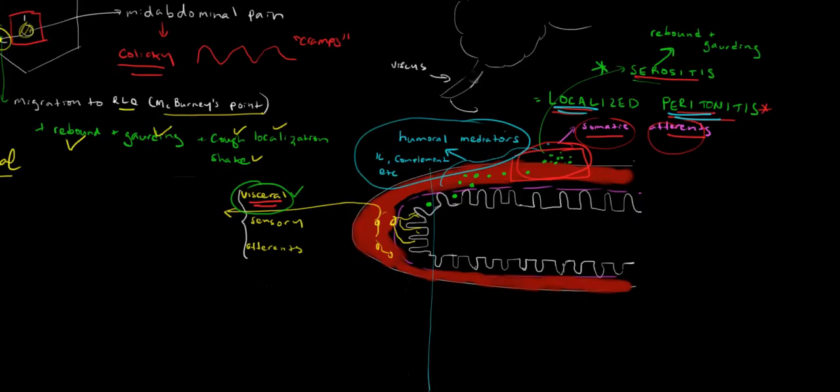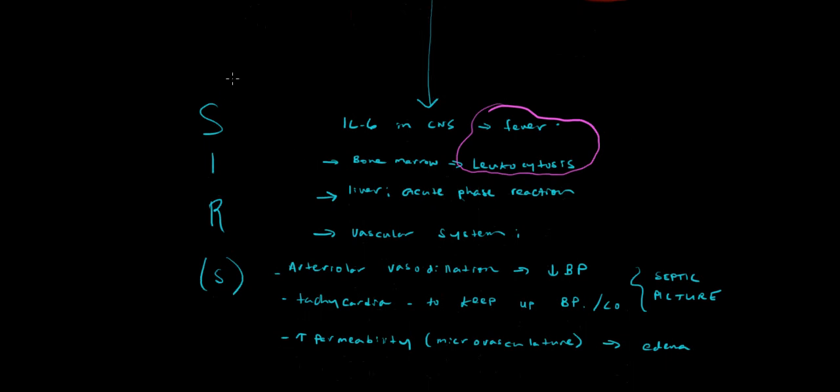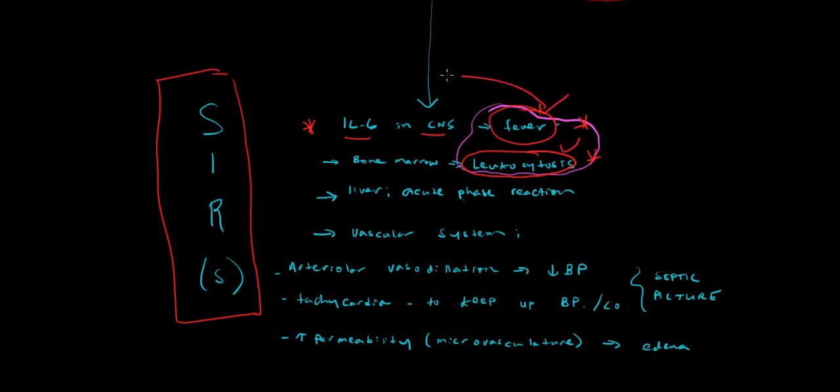And what does that give you? A systemic inflammatory response. What are the hallmarks of the systemic inflammatory response? Well, one of them is this cascade causes interleukin-6 to be expressed in the brain and that gives fever. The inflammatory mediators go to the bone marrow and make increased white cells and that's leukocytosis. So when you have a patient who has features of right lower quadrant pain with rebound and guarding, but now the patient has fever and a white count, you could be sure the patient has a systemic inflammatory response.